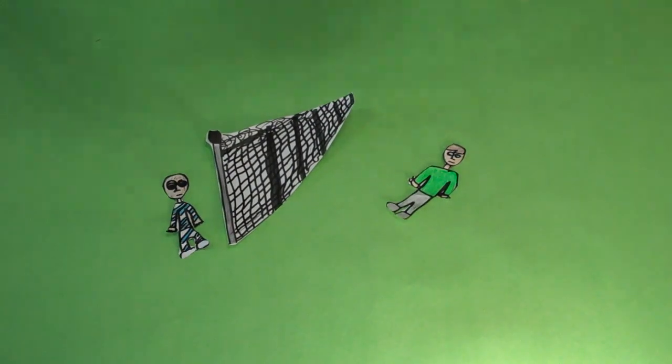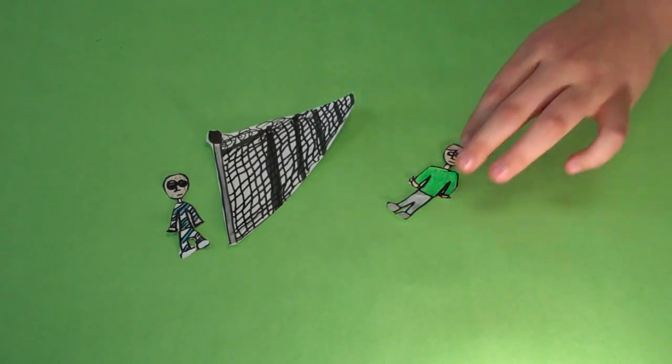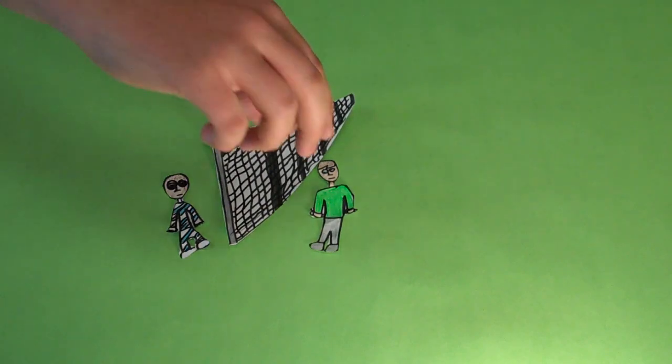Bruno and Shmuel meet at the fence and talk to each other every single day. Shmuel and Bruno become best friends.